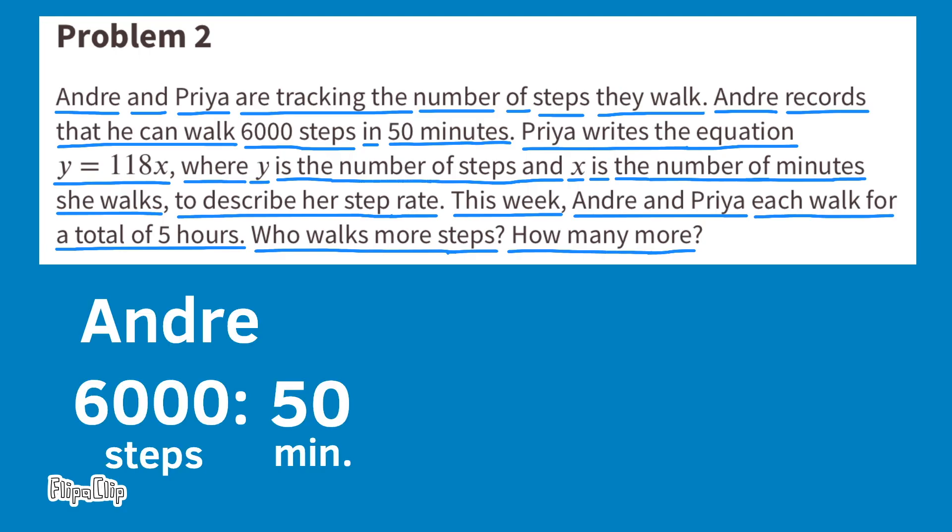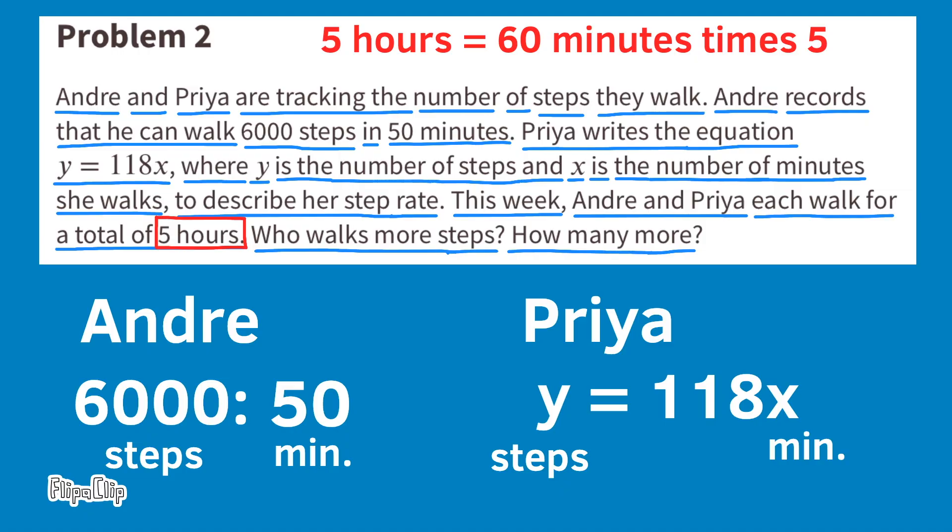Here's the information one more time. Andre walks 6,000 steps in 50 minutes. They're going to walk 5 hours, and 5 hours equals 60 minutes times 5. That means that 5 hours equals a total of 300 minutes. 300 minutes divided by 50 minutes equals 6. So I know that 50 times 6 equals 300. Since we multiplied the number of minutes by 6, we need to multiply the number of steps by 6. 6,000 steps times 6 equals 36,000 steps. For Andre, that's 36,000 steps in 300 minutes, or 36,000 steps in 5 hours.